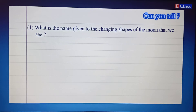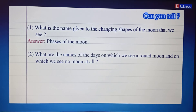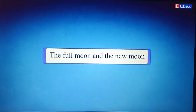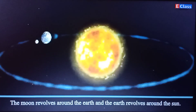Phases of the Moon — question and answer: What is the name given to the changing shapes of the moon that we see? Answer: Phases of the Moon. What are the names of the days on which we see a round moon and on which we see no moon at all? Answer: A round moon is seen on the Full Moon day, and on New Moon's day no moon is seen.